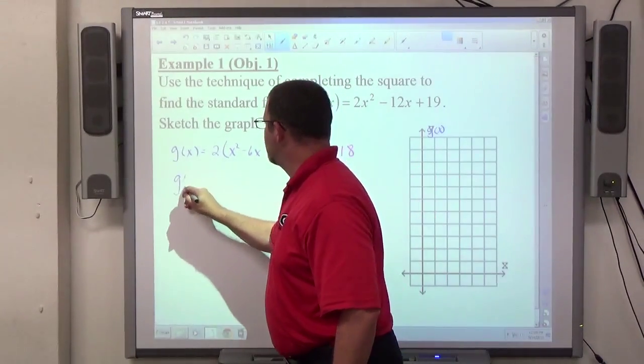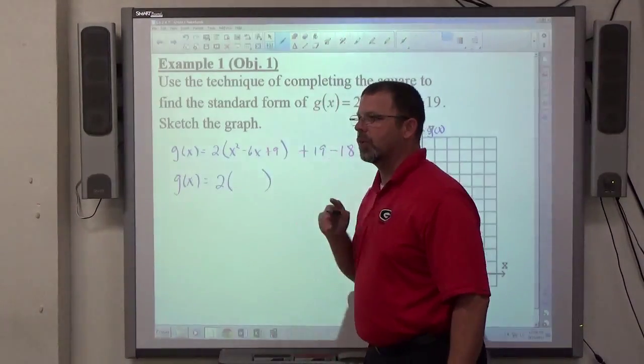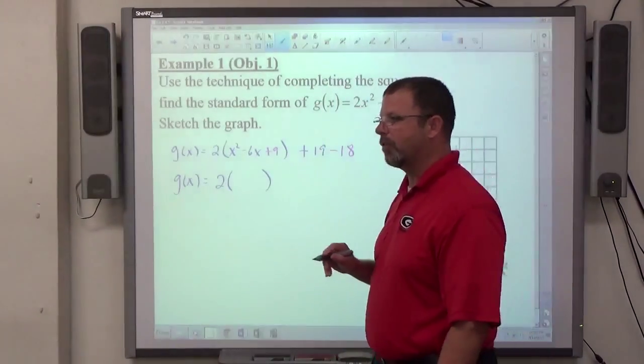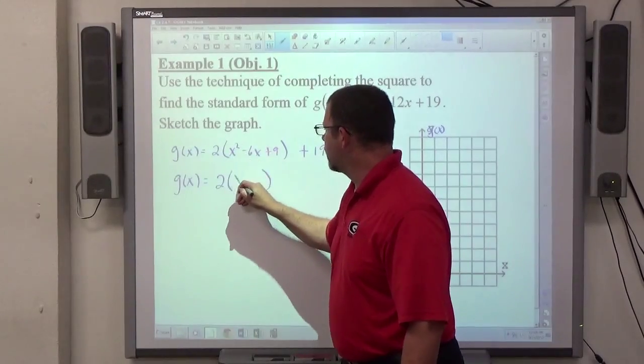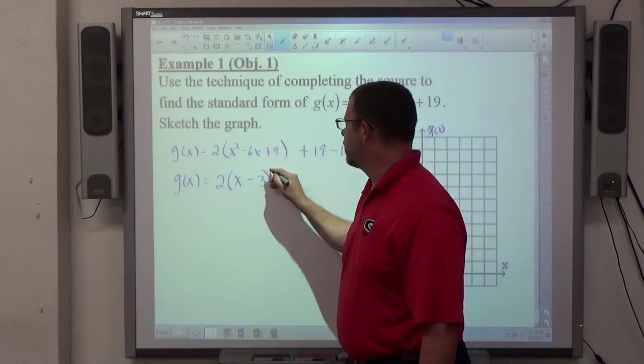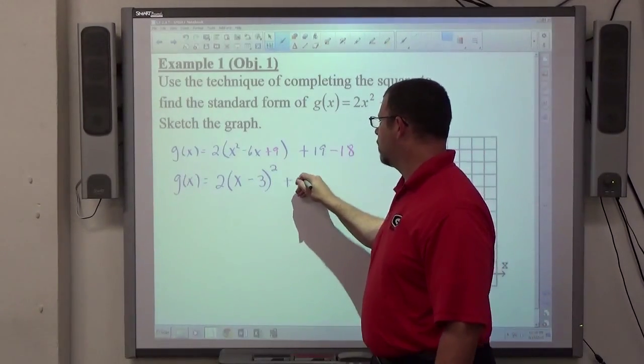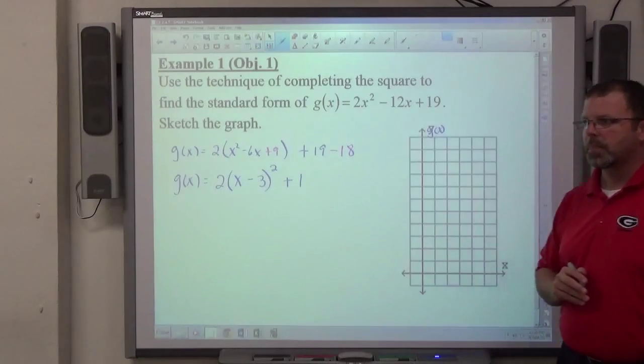That gets me to g(x) equals 2 parentheses. The whole reason we complete the square is to get this nice, perfect square trinomial that factors easily. The square root of x squared is x, the square root of 9 is 3. The sign of the linear term is negative, and we square that parentheses. 19 minus 18 is plus 1.